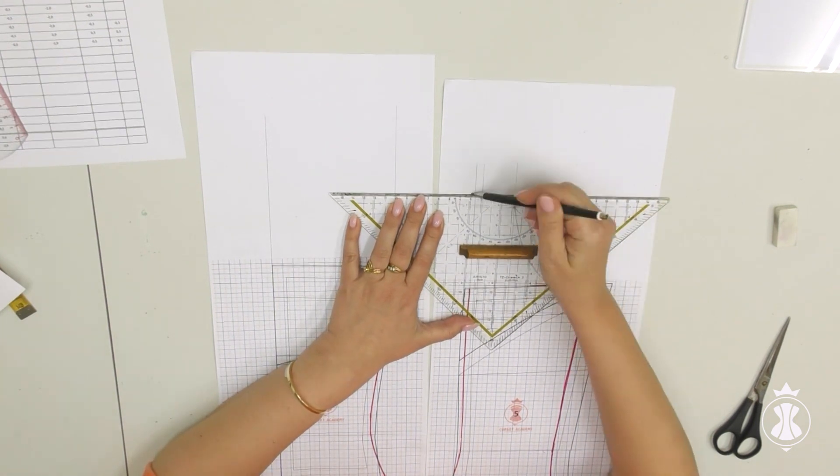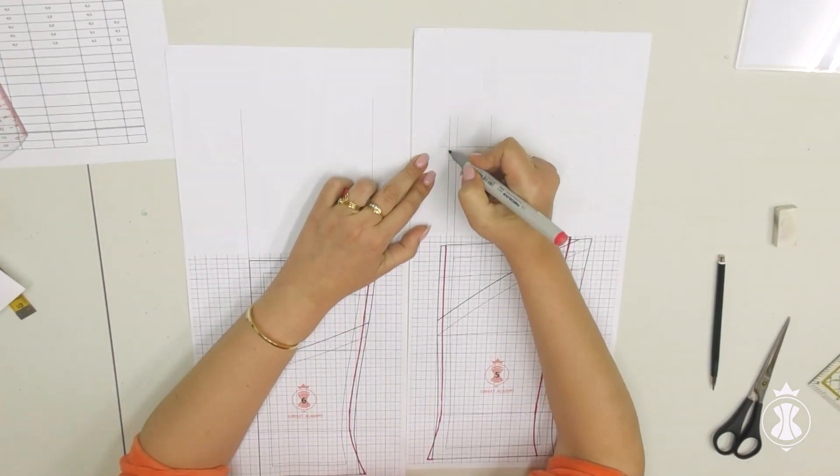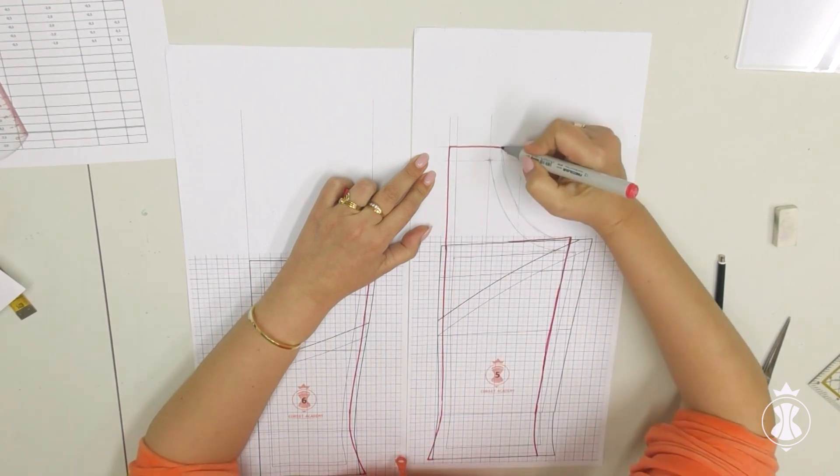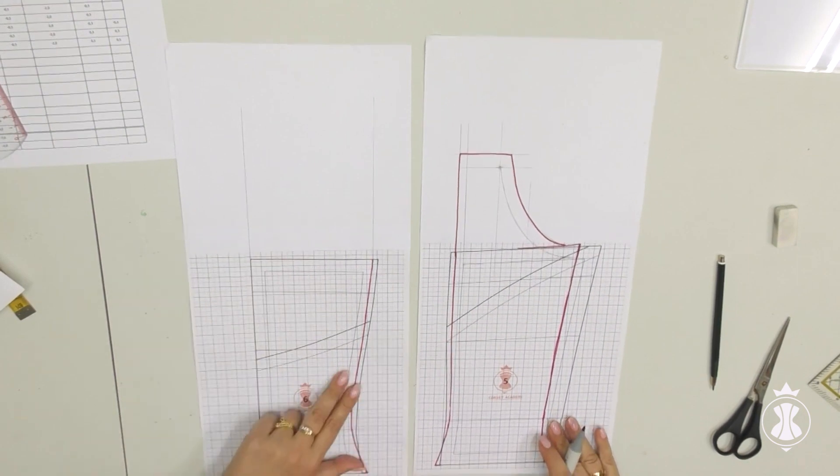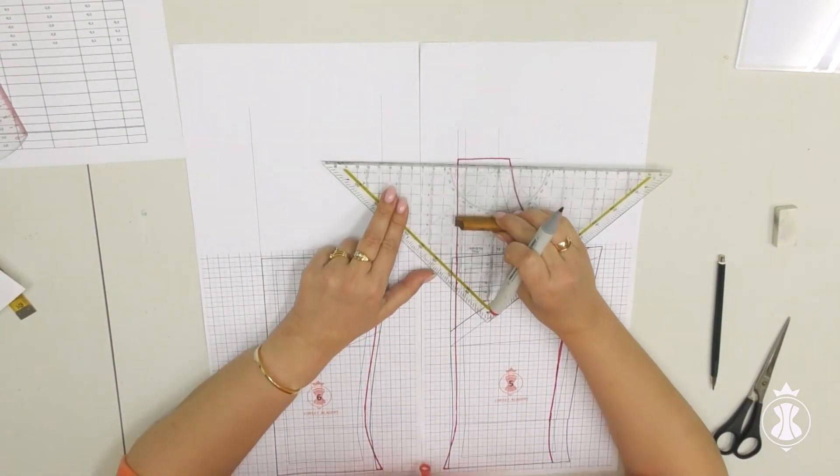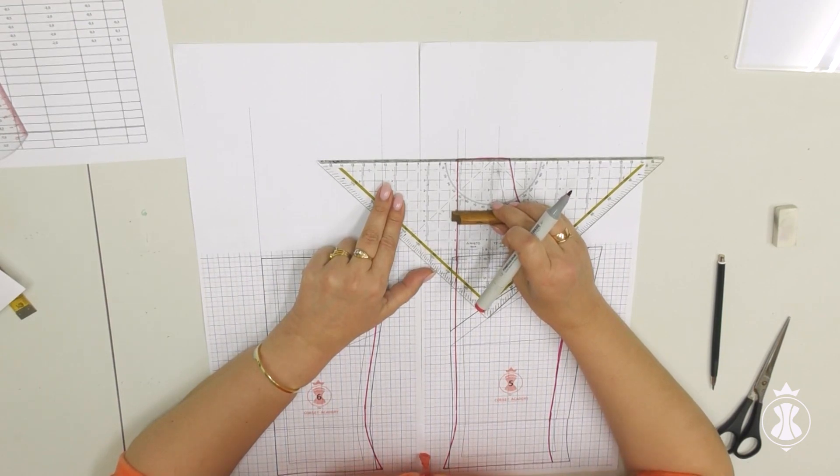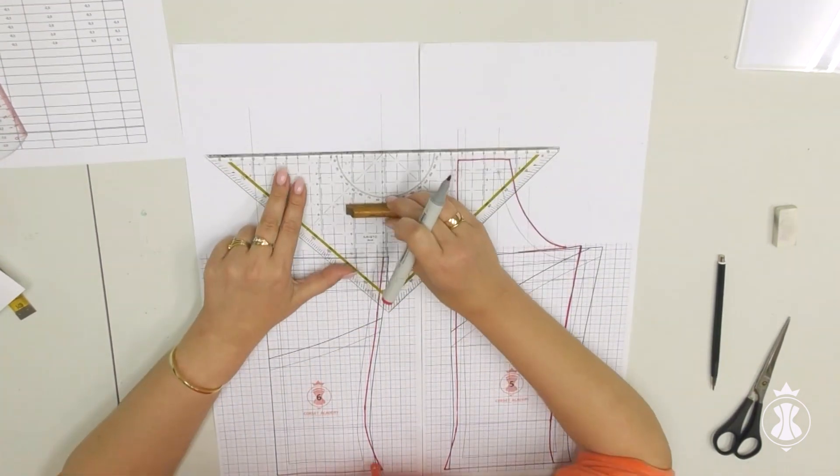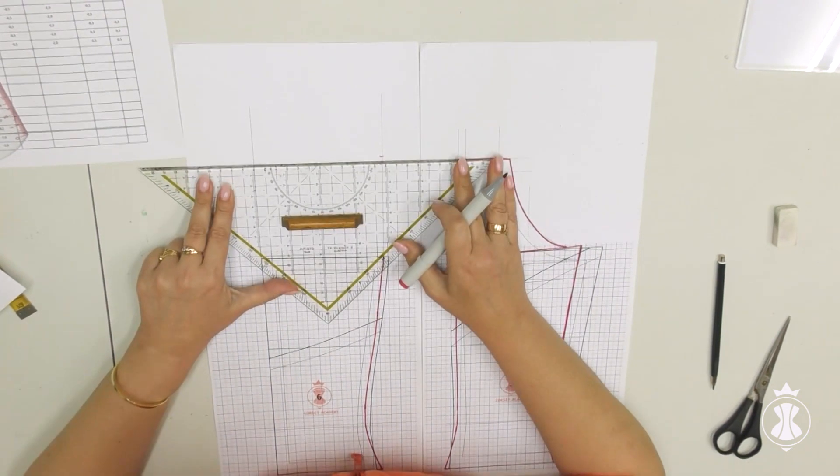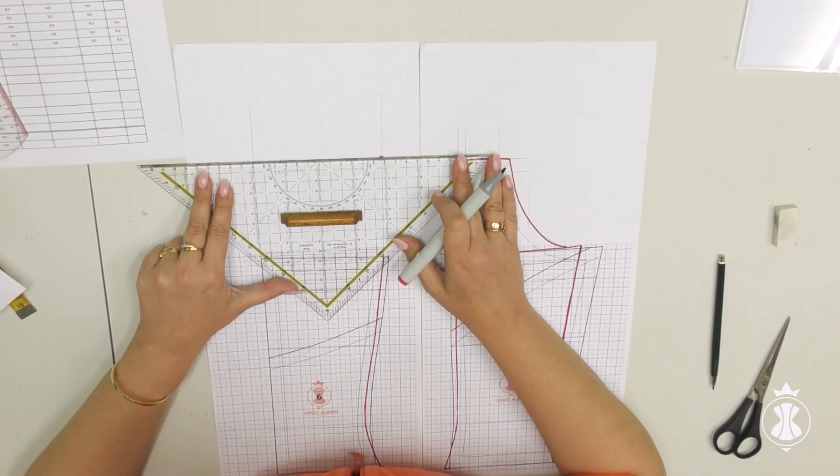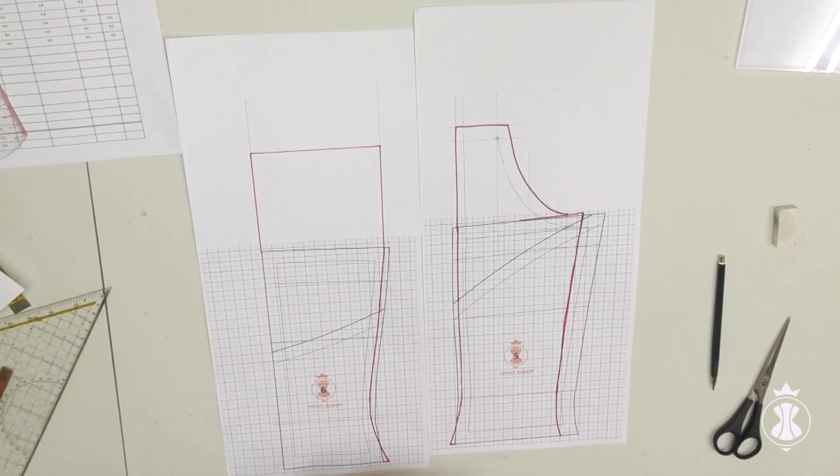Draw seam allowances. I elongate the central back pattern for the same value as the side back pattern and add seam allowances.